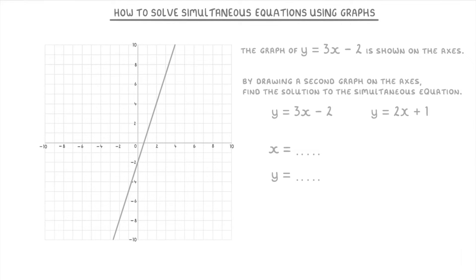Try pausing the video here and see if you understand what to do with this question. For this one they've already drawn the line y = 3x - 2, so all you need to do is draw the line y = 2x + 1, which would look like this, and then find where they cross. This point here is (3, 7), so you just put x = 3 and y = 7 as your answer.